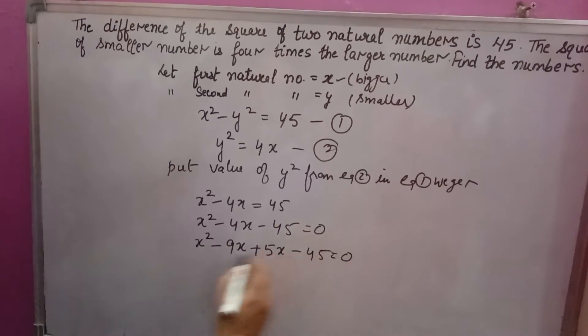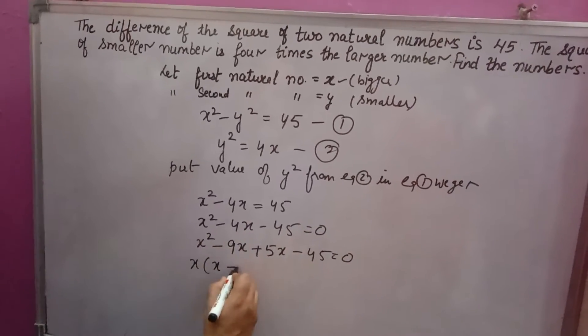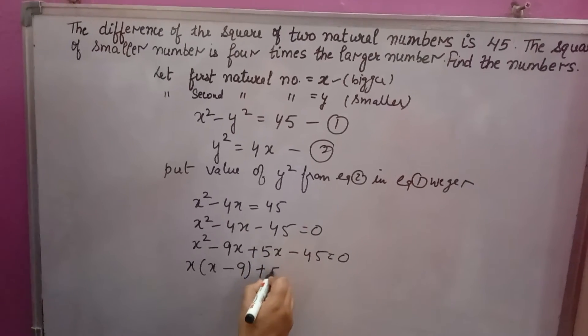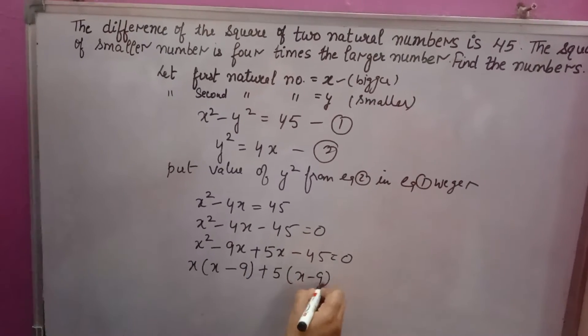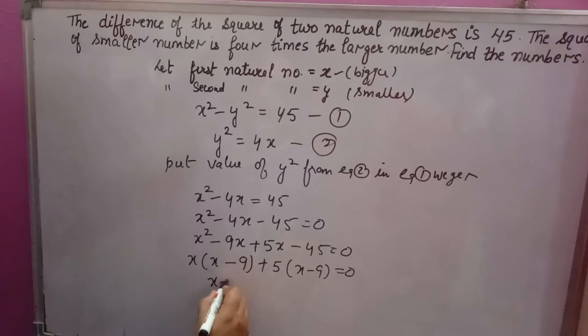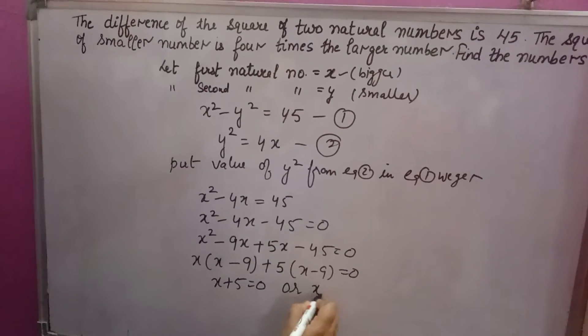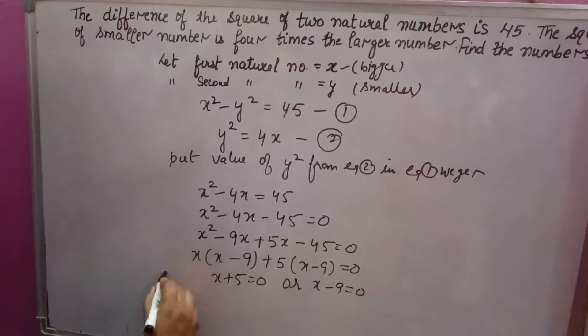x common, x minus 9, plus 5 common, x minus 9, equal to 0. So x plus 5 equal to 0, or x minus 9 equal to 0.